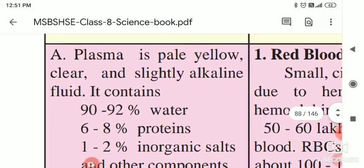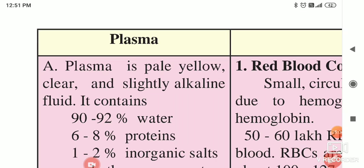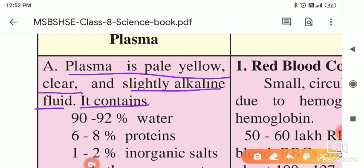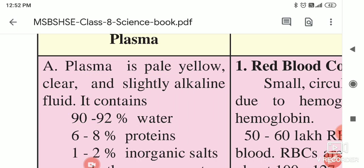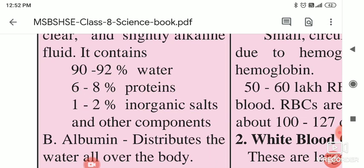First, plasma. As you know, whenever we have some diseases and we go to the DMLT centre to give our blood, what they do is centrifugation. By centrifugation, the plasma is separated. The colour of plasma is pale yellow. It is clear, slightly alkaline — meaning a basic fluid. It contains 90 to 92 percent water, 6 to 8 percent proteins, 1 to 2 percent inorganic salts, and other components are also present in the plasma.